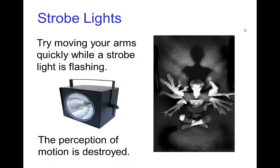Another way of experiencing this disruption of the perception of motion is if you're somewhere with strobe lights flashing at maybe 10 or 20 flashes per second or even higher. If you then quickly move around — say, flail your arms — you won't actually perceive your arms as moving; they just appear as multiple static images. This is another example of disruption of the perception of motion, where the strobe light takes the role of the frame rate in animation.